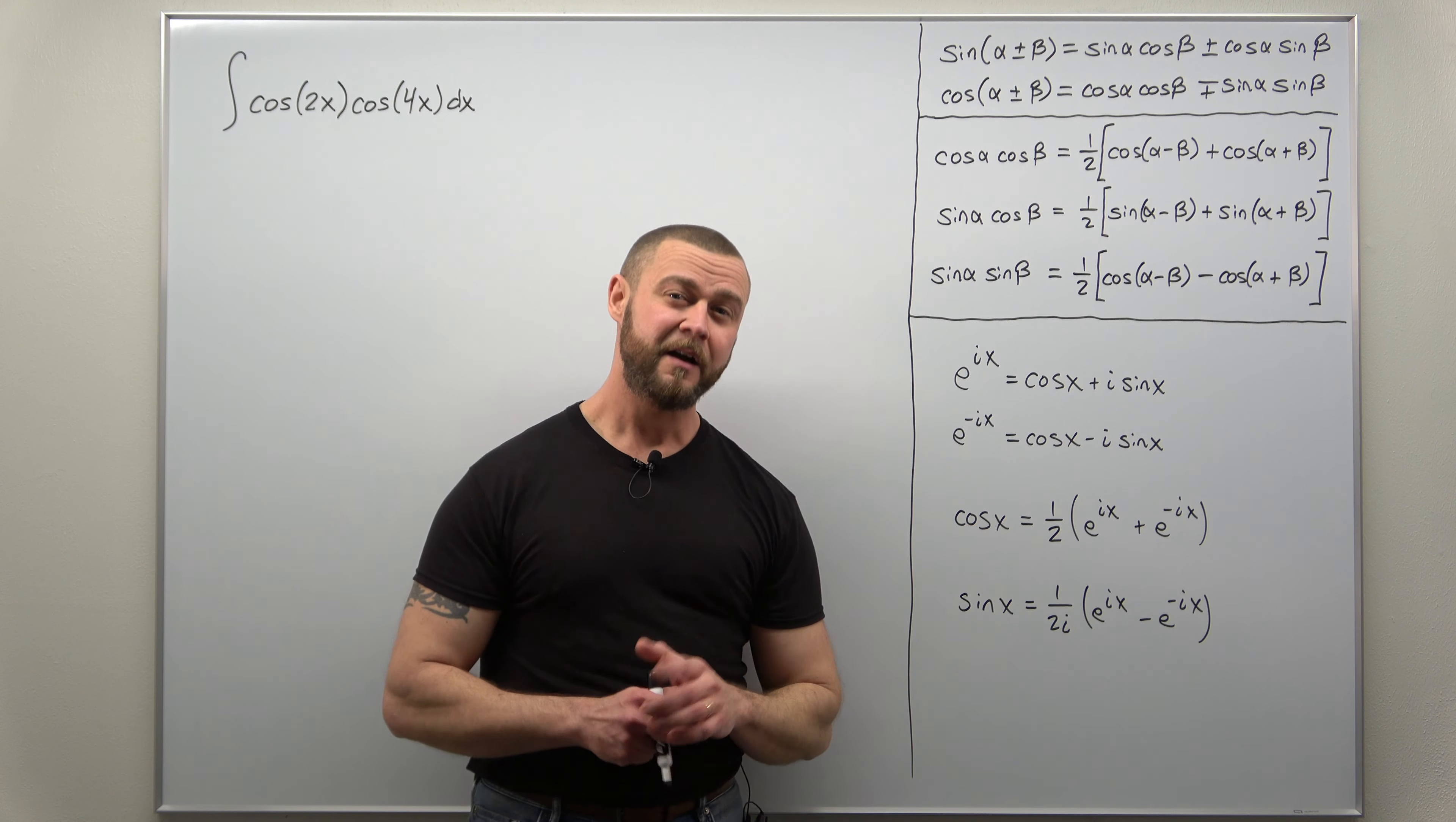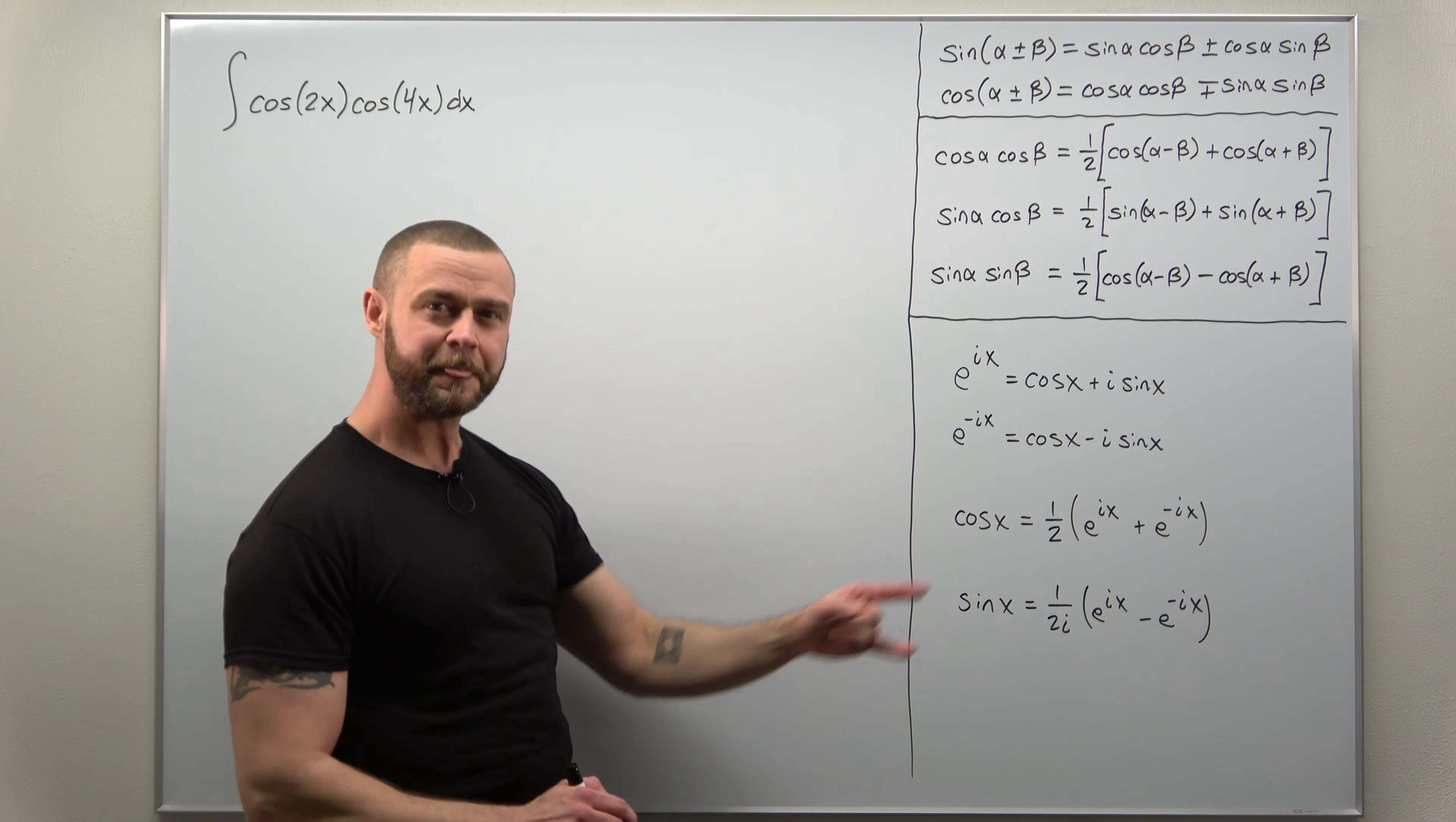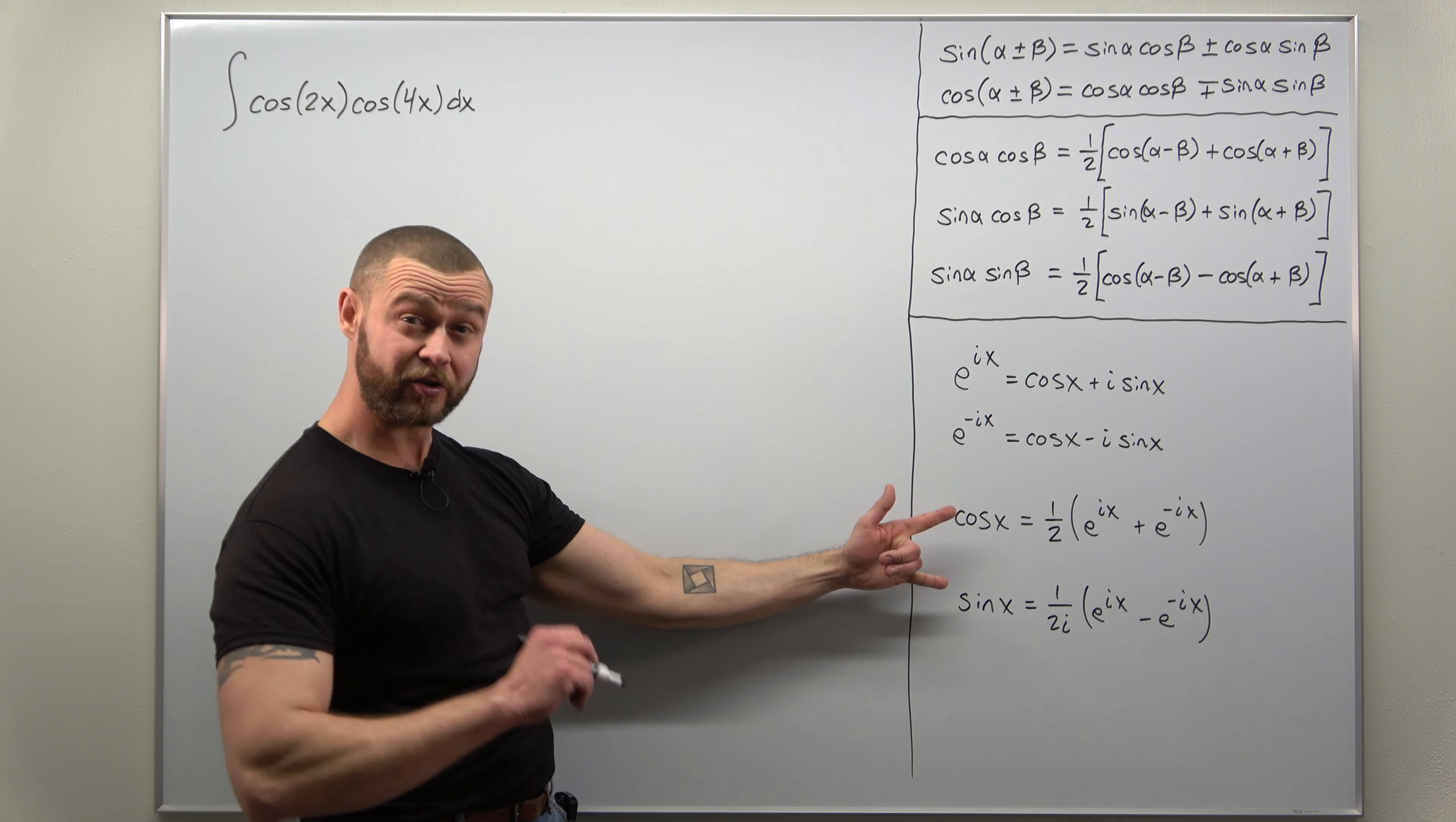The way that the pros do it is with Euler's formula. Technically, Euler's formula is the first one. We're going to be using the related identities, but close enough. We're going to bypass this.